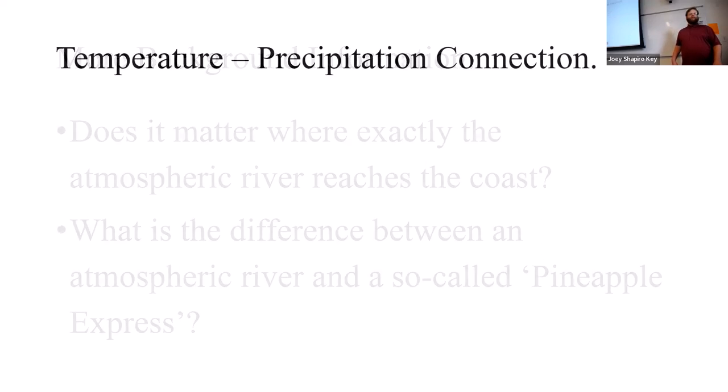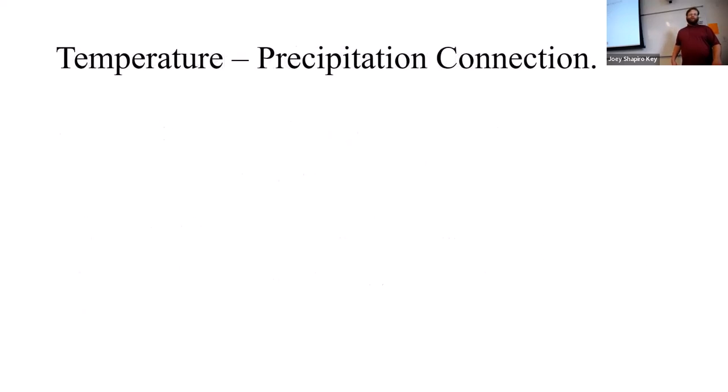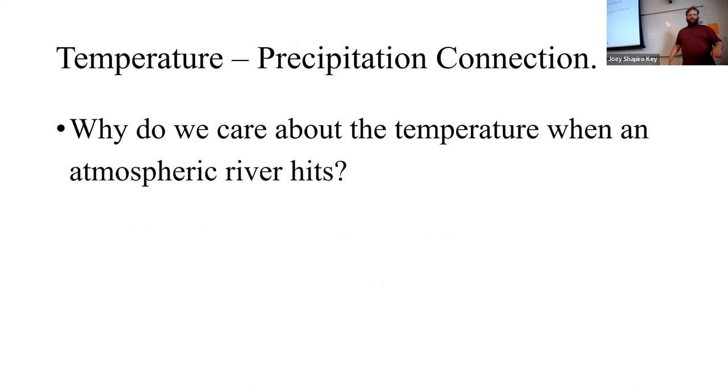Why do we care about the temperature? Every given air parcel has a maximum amount of water vapor it can contain before condensation overwhelms evaporation. This maximum is called the saturation mixing ratio. The Clausius-Clapeyron equation links it to the temperature and there's an exponential dependence. So increasing the temperature even a little bit can cause the saturation ratio to increase by a much greater amount.